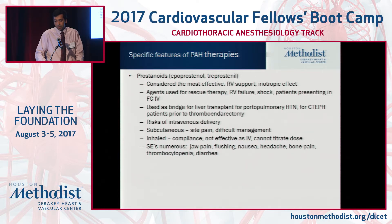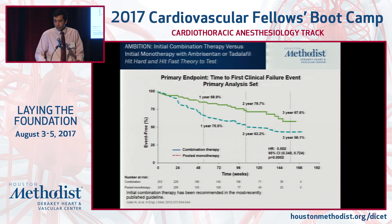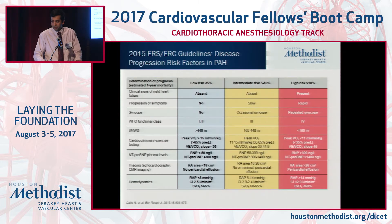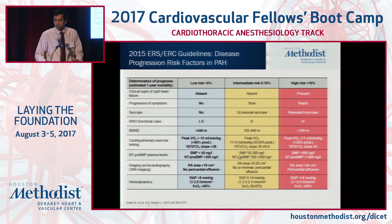The Ambition trial showed that dual upfront combination therapy is better than monotherapy. Risk stratification classifications guide treatment choices — low to intermediate risk patients can be managed with oral therapies, whereas high-risk patients really warrant prostanoids. Unfortunately there's not much time for RV failure, but Dr. Estep covered many of the mechanical circulatory options, so we'll open it up for questions.